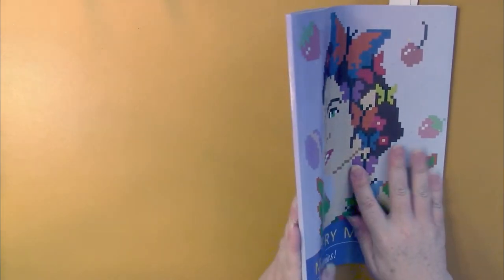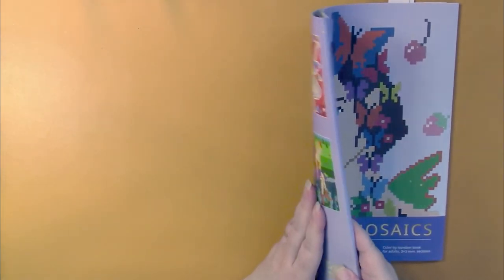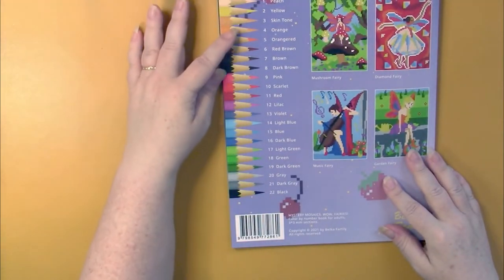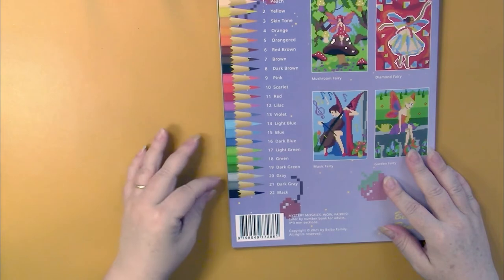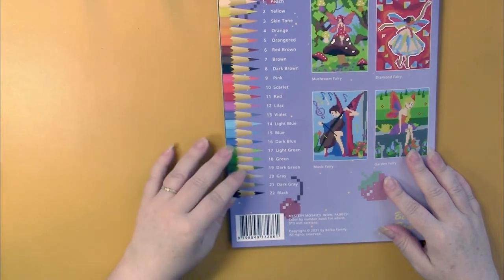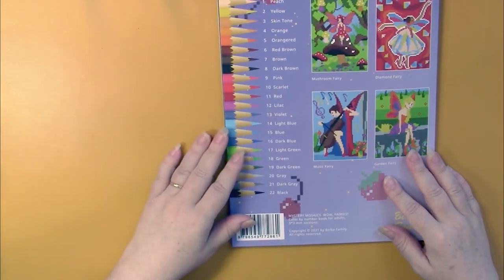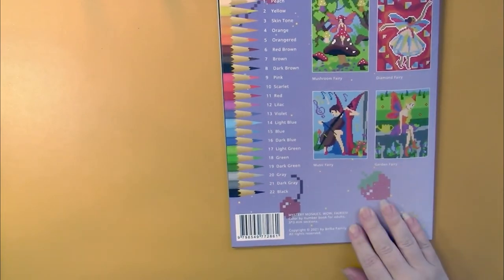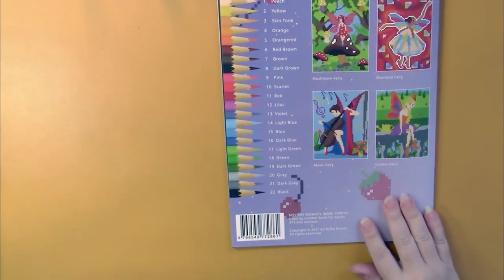We have a glossy front cover, a spine with no information on it, and the back cover shows us the complete color palette that is used throughout the book and throughout all Belba Family's books. Then we have a sample of some pictures that we will find inside. They're very bright and colorful.